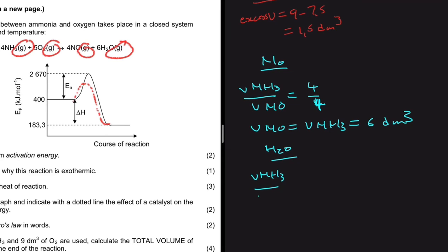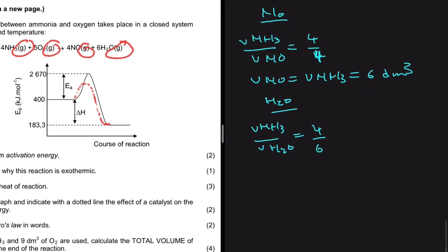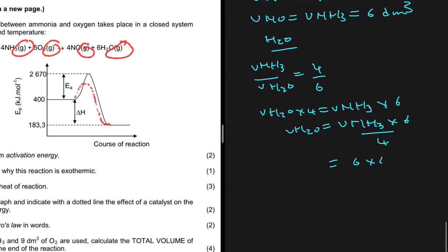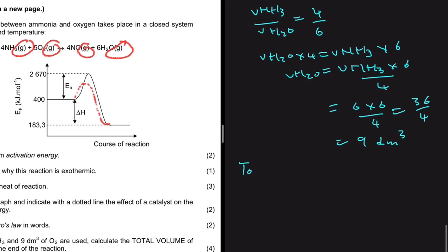Now for H2O: volume of NH3 divided by volume of H2O equals 4 divided by 6. Cross-multiplying: 4 × V(H2O) = 6 × 6 = 36, so V(H2O) = 36 ÷ 4 = 9 dm³.